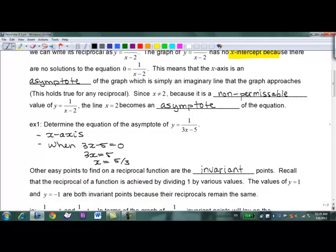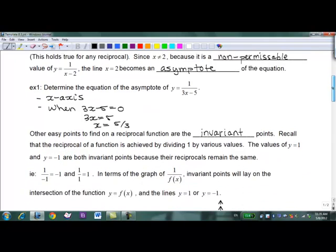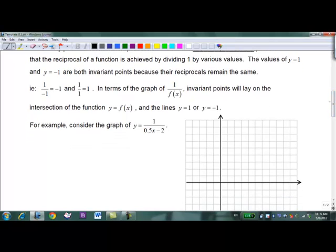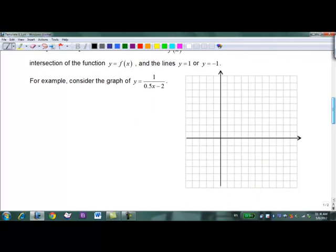Reciprocal function is achieved by dividing one by various values. The values of y equals 1 and y equals negative 1 are both invariant points because the reciprocals remain the same. So what does invariant mean is that they stay in the exact same spot. If you have a y value of 1 and you flip it it's still 1. If you have a y value of negative 1 and you take the reciprocal of that it's still negative 1. In terms of the graph y equals 1 over f of x, invariant points will lay on the intersection of the function y equals f of x and the line y equals 1 and y equals negative 1. Basically anytime the y value is 1 or negative 1.